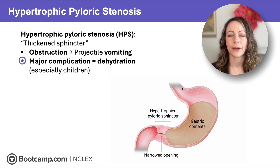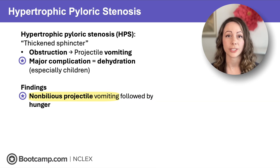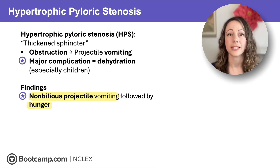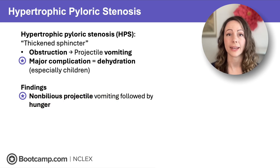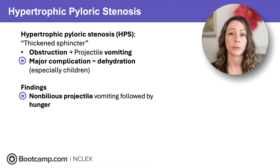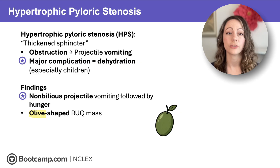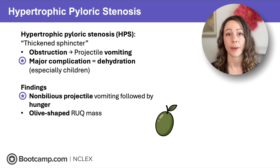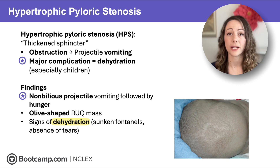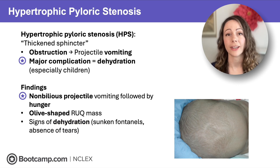What do these kids look like? We'll see non-bilious projectile vomiting followed by hunger, because food is not getting into the small intestine where bile is added, and it's not being absorbed there, so they're hungry all the time. We'll also see an olive-shaped right upper quadrant mass from that thickened sphincter, and signs of dehydration — sunken fontanelles and absence of tears when crying.